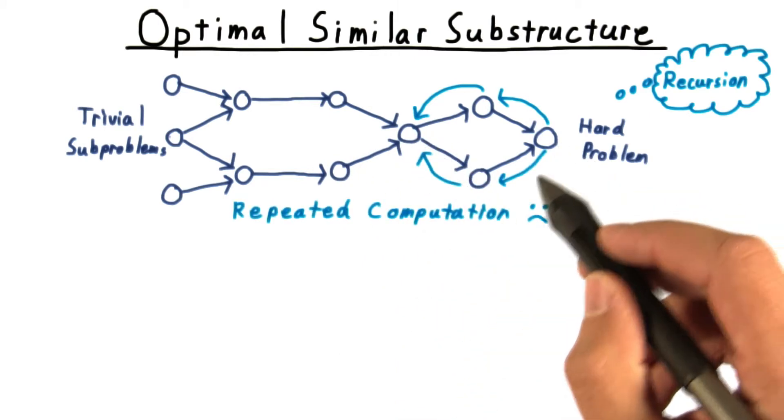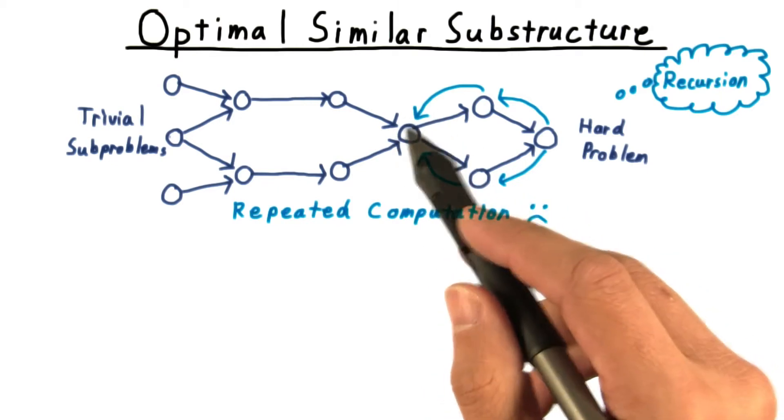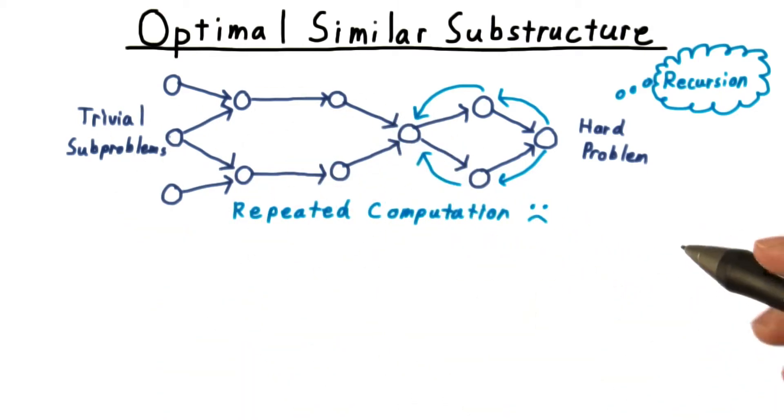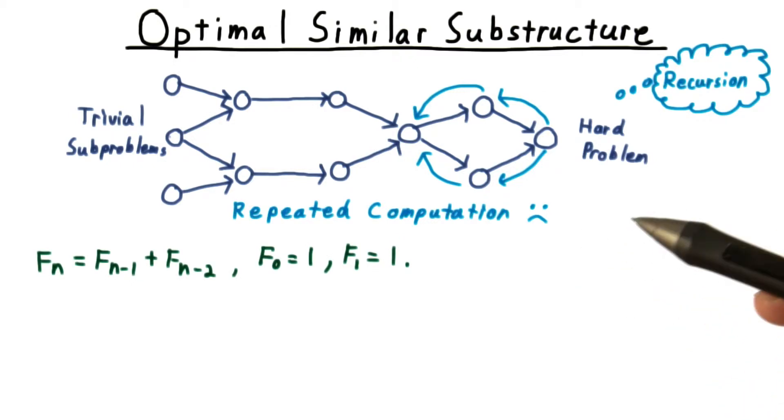But when we recurse through this branch, we would come to this node again and do all this recomputation again, which would be terribly wasteful. This is sometimes called one of the perils of recursion.